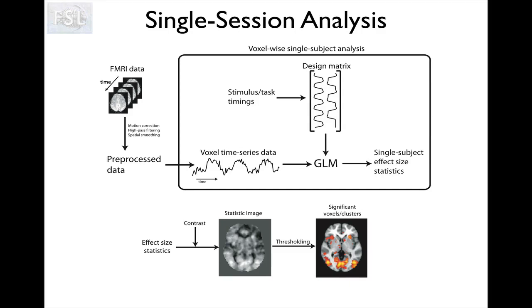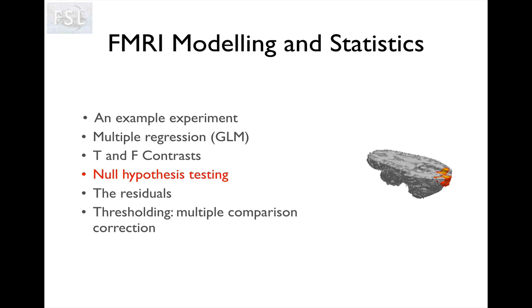Hello and welcome back to the second part of the Gilliam talk. As I said in the first part, the second part is going to be much shorter. I'm going to introduce a few concepts that are useful to know before you start doing the first practical: hypothesis testing, what the null hypothesis is, what the null distribution is, a few things about residuals, and finally what multiple comparison correction is and why it is necessary in neuroimaging.